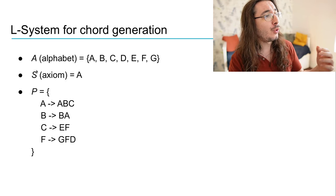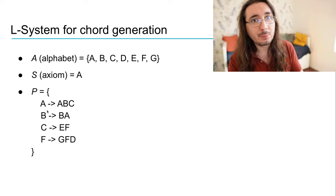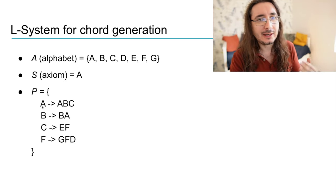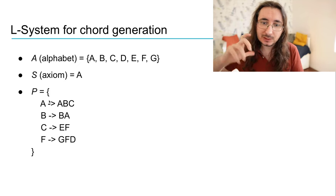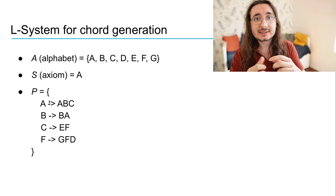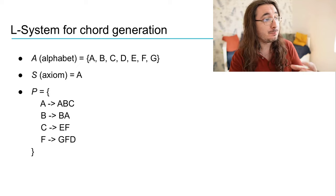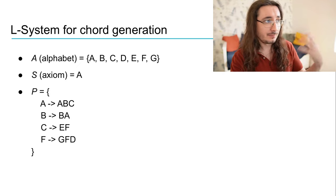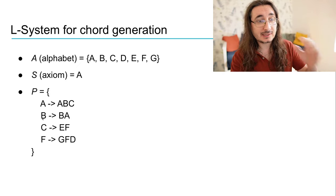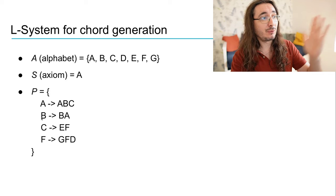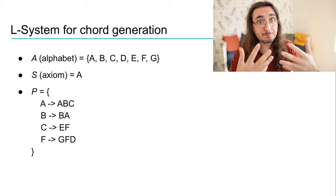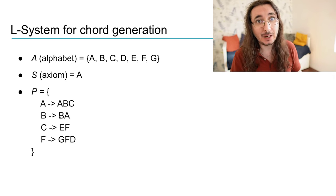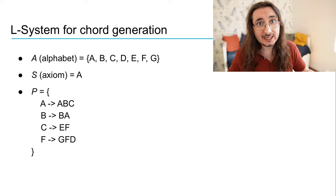We have four production rules. Whenever we encounter an A minor chord, it's going to be replaced and transformed into a sequence of three chords: A minor, B minor, and C major. For B minor, whenever we encounter this symbol, the transformation will be into two chords: another B minor and an A minor. The output of this L-system is going to be a string with a sequence of symbols.